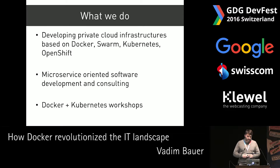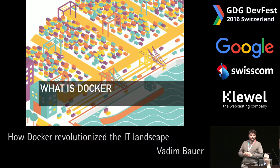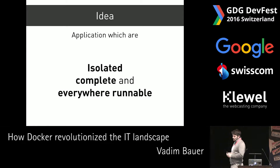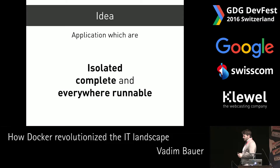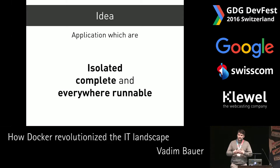We also do some workshops in the area of Docker containerization and also in Kubernetes, the clustering infrastructure. But let's dive into Docker. What is the idea behind Docker? The principle idea behind Docker is to have an application which is isolated, complete, and that runs everywhere. Isolated means that there are no conflicts or dependencies to other libraries that are on the system — so you know exactly what you're running. Complete means that the application brings everything with it that it needs — everything is part of the package.